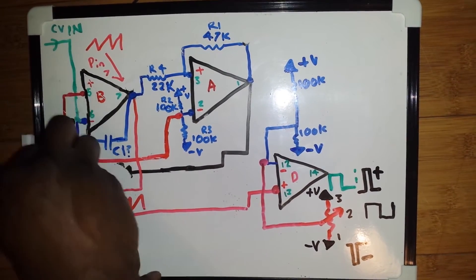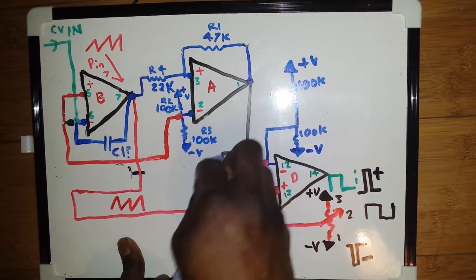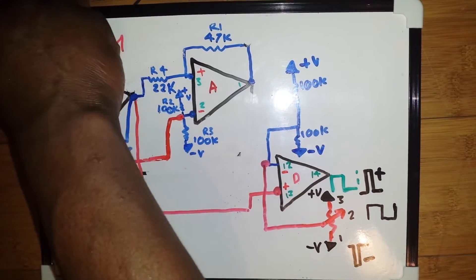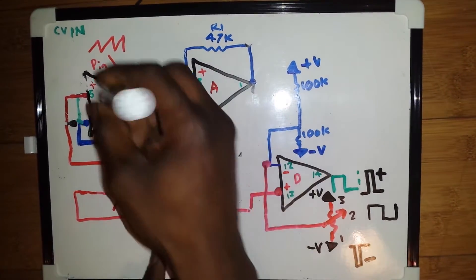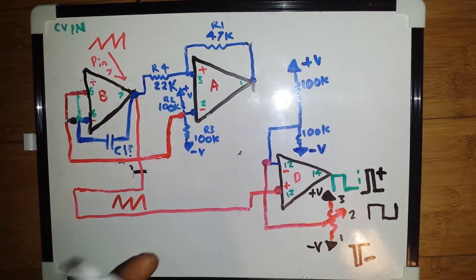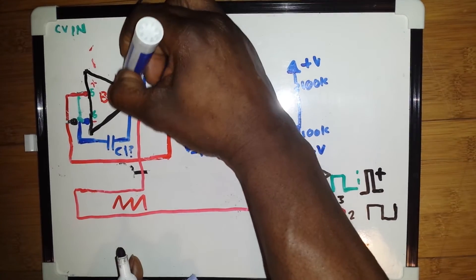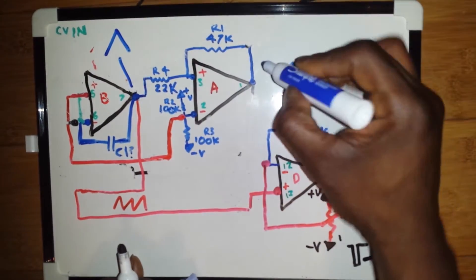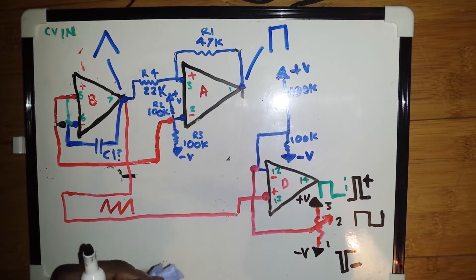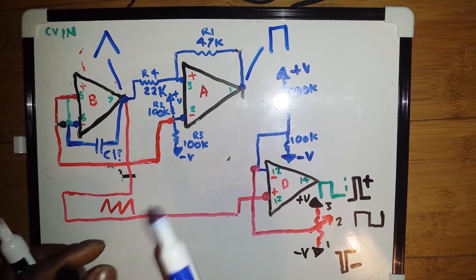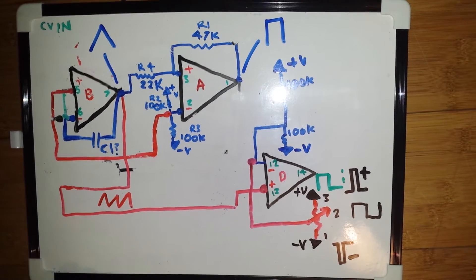So if we get rid of the diode and we will get rid of the CVN, what we basically have is at pin 7 we will get a triangle wave. At pin 1 we will get a square wave. So what we need for pulse width modulation is the triangle wave, which is mainly used on synthesizers.